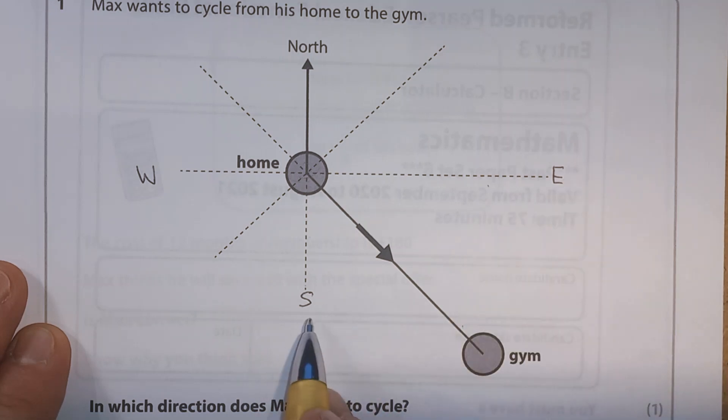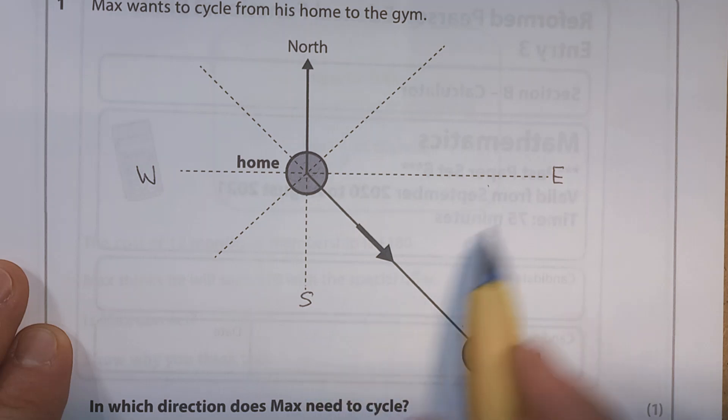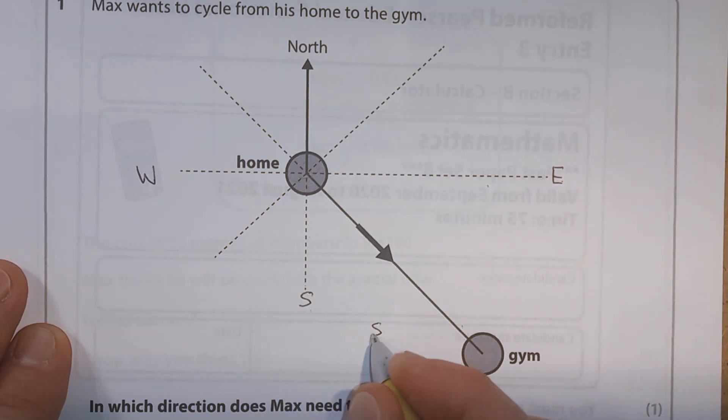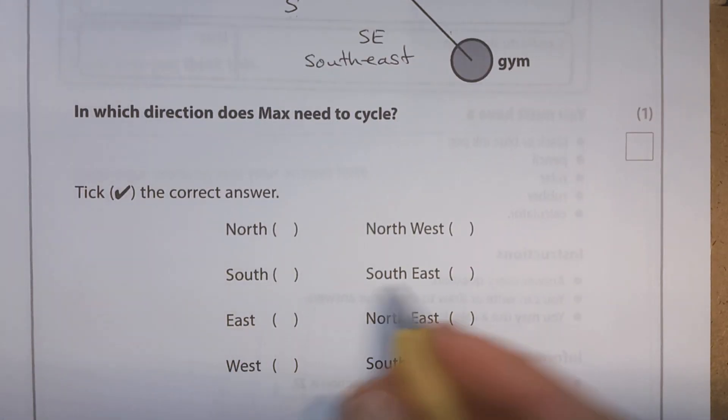Okay. Well, this is between east and south. And when we're doing a direction that's halfway between the two, a compass direction, we always go with the top or the bottom first. So because it's between these two, we're going to go with the south and then the east. So we're going to call it SE or southeast. So let's see if that's one of the options. Yes, it is. So we can tick that one there.